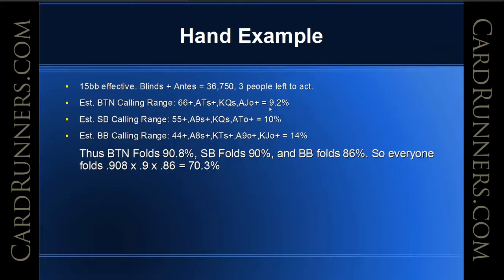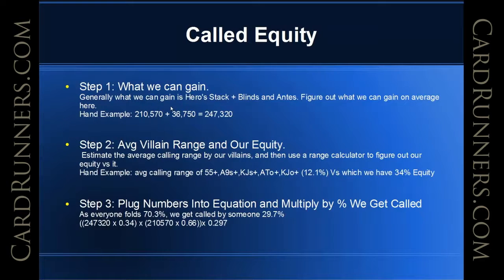If the button is calling us 9.2%, this means the button folds 90.8%. The small blind folds 90%, and the big blind folds 86%. If you multiply it through, everyone folds overall 70.3%. Now let's look at the called equity part of this equation. For the first step, we have to look at what we can gain. Generally what we can gain is our stack plus the blinds and antes.